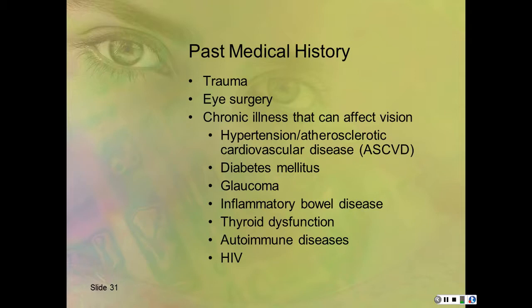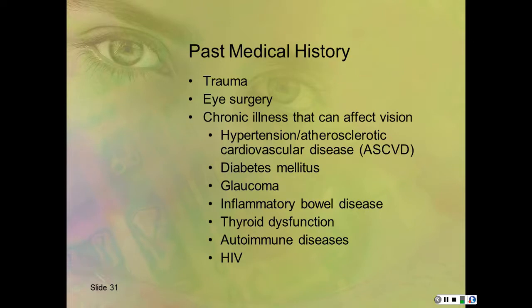For past medical history: trauma, eye surgery, and chronic illnesses that affect vision—hypertension and atherosclerotic cardiovascular disease can affect the retina; diabetes definitely does. Glaucoma, inflammatory bowel disease, thyroid dysfunction, and autoimmune diseases and HIV can also change the vision.